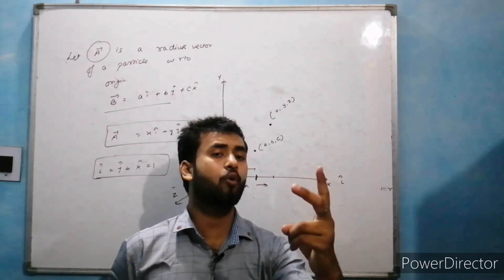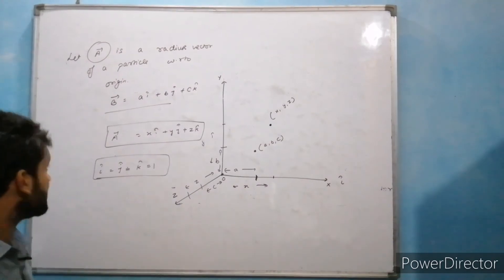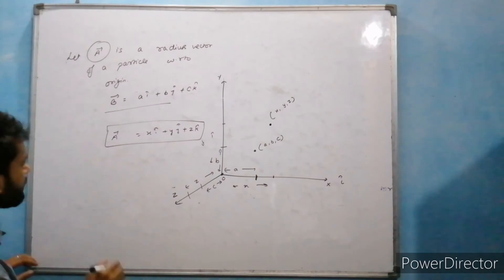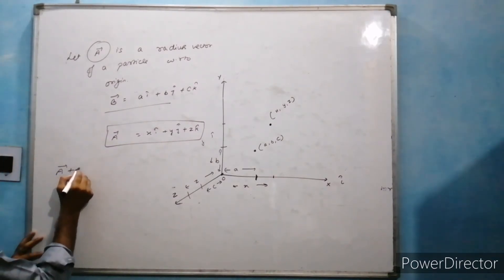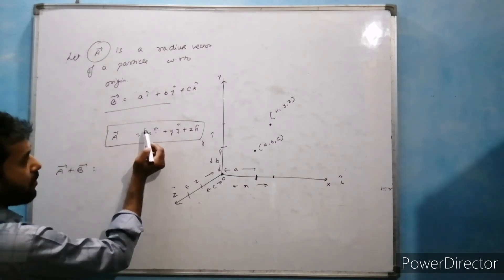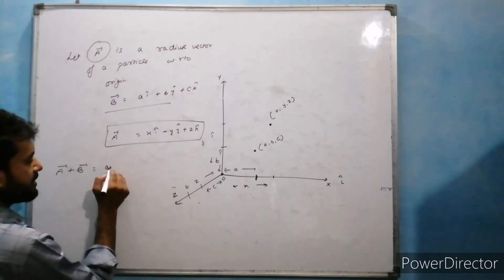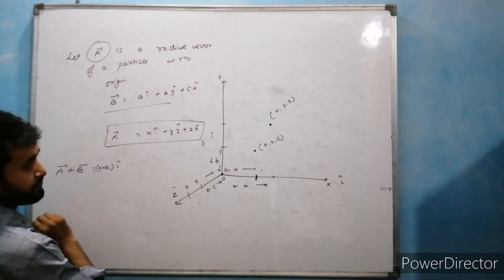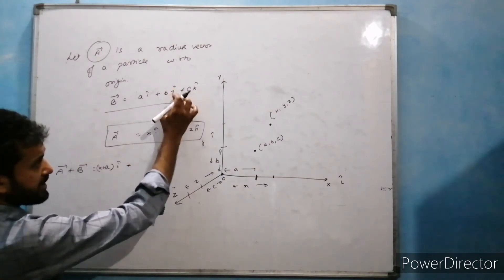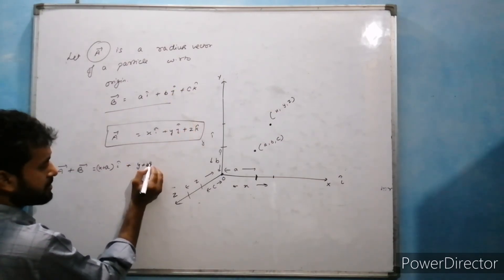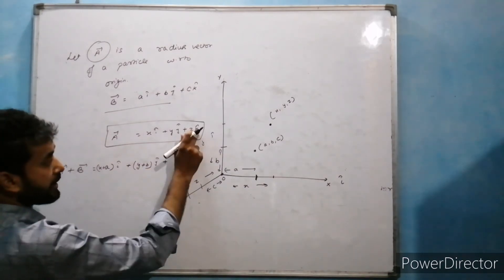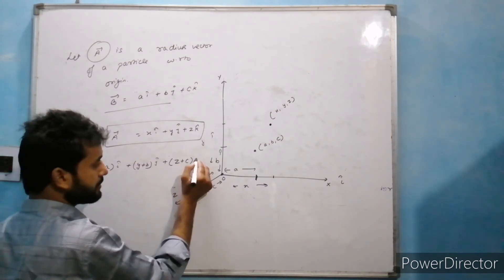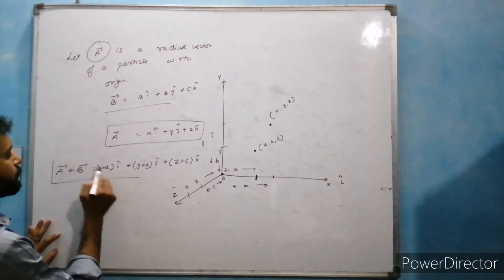अब बात करते हैं दो vectors को add कैसे करते हैं। अगर हमारे पास दो vectors given हैं तो आप बिल्कुल algebraic sum की तरह addition करेंगे। i के साथ i के component ही add करेंगे: (x+a)i, j के साथ j के component add करेंगे: (y+b)j, और k के साथ k के component add करेंगे: (z+c)k। यह था addition of two vectors।